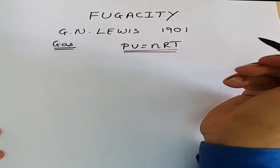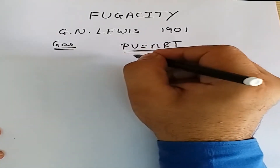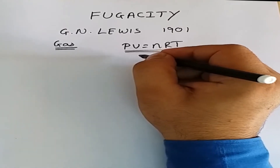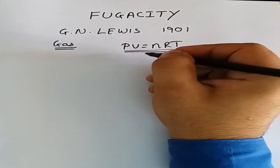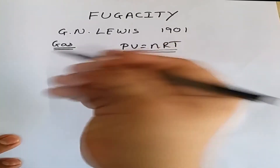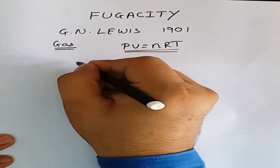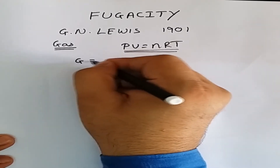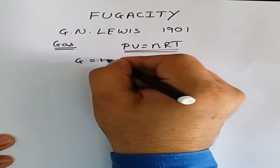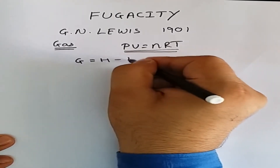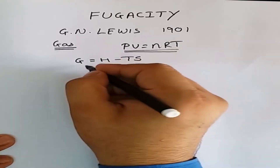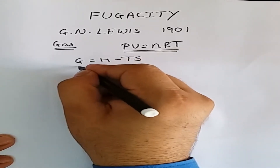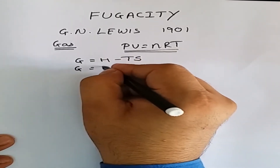Gases behave ideally when we either reduce the pressure or increase the temperature of the system, and then all gases will follow that particular equation. Using the free energy function and the first and second laws of thermodynamics, we know that G = H - TS.